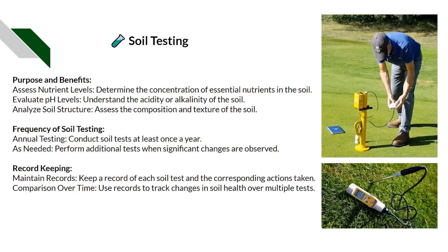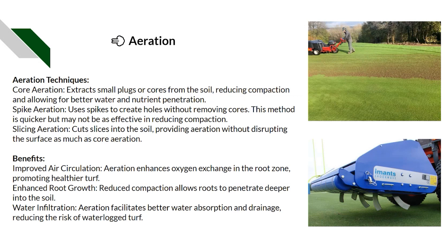Aeration techniques include core aeration — where plugs are removed from the surface — spiking aeration, slicing aeration, and solid tining, which is like core aeration but without pulling the core out. Even within coring or solid tining there are variations: a pro-core goes straight in and out, while a Vertidrain heaves and flicks beneath the surface, going deeper and cracking the profile. The goal is to improve air circulation and oxygen exchange within the root zone, promoting healthier turfgrass, root growth, and water infiltration.